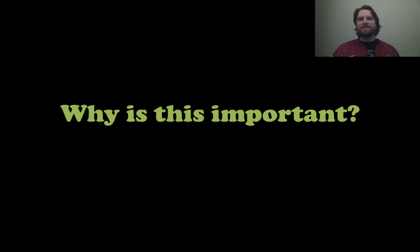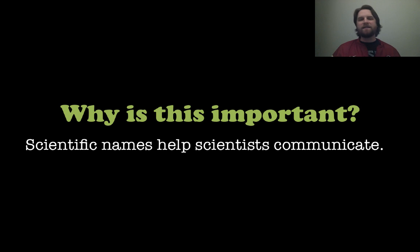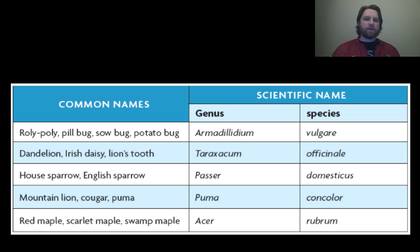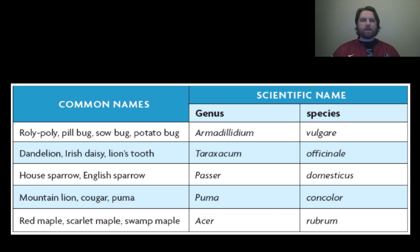So why is this important? Scientific names help scientists communicate much better. When you get things like a roly poly — also called a pill bug, a sow bug, or a potato bug depending on where you live — it's hard to know what you're talking about. If you have a genus and species name, that is very specific and helps scientists communicate across different areas of the world.